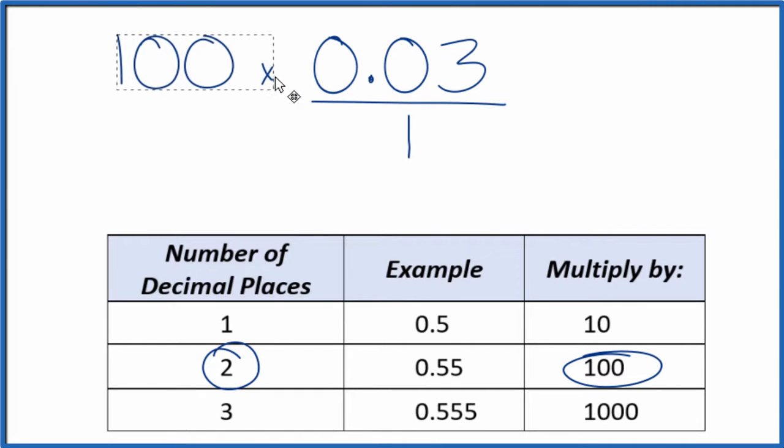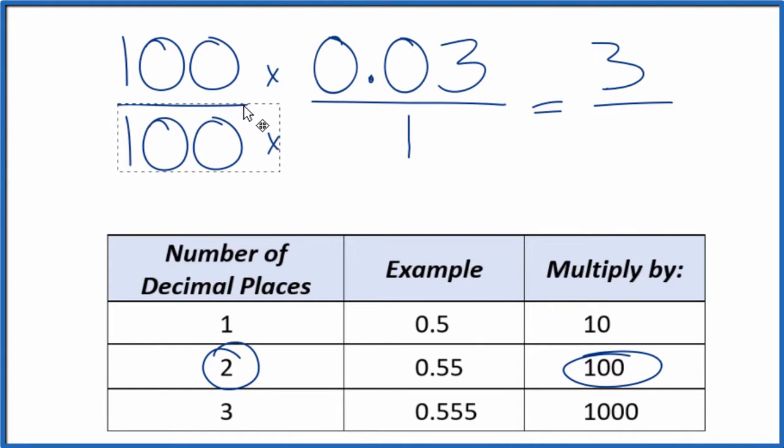So if we multiply by 100, 100 times 0.03, that equals 3. So we have a whole number. But we can't just multiply the numerator by 100. We also have to multiply the denominator by 100.